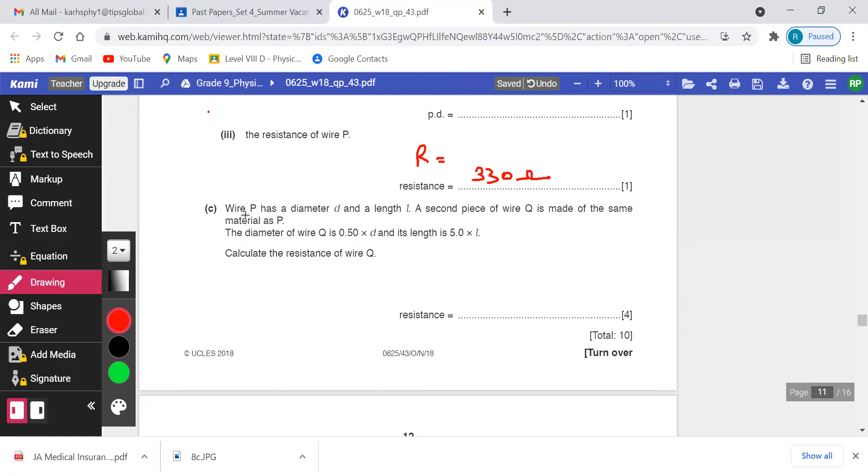Now they are saying that wire P has a diameter D and length L, which is the resistance present in this wire. Wire P has diameter D and length L. We know that the resistance formula is R equals ρL by A, where ρ is density, L is length, and A is cross-sectional area.